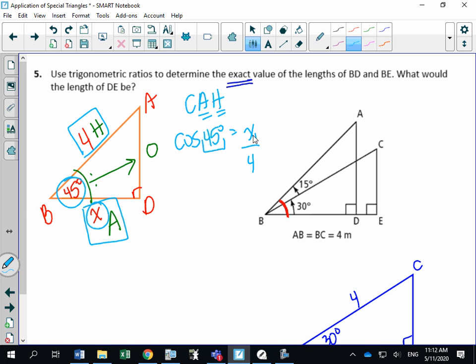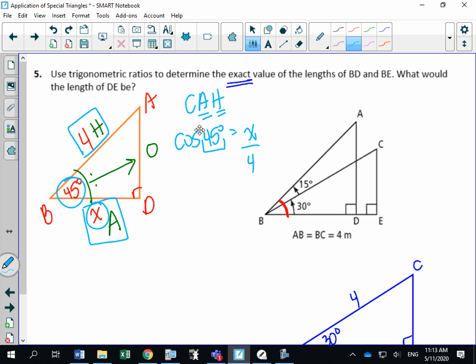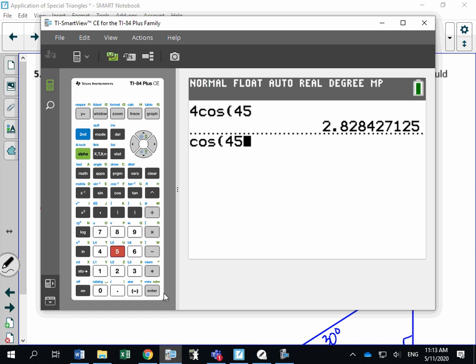If this was math 10C and I said, what is X? You would say we need to isolate X. It's being divided by 4. Let's multiply both sides by 4. So if this was 10C, you would say your answer is 4 times the cos of 45, that number there. And I would have said for 10C, 2.8 would be your final answer. In 20-1 and 30-1, you can no longer give decimal answers. You have to give exact values. So what you need to do is you need to take out this cos of 45 and you need to say, what exactly is the cos of 45 degrees? Like, what number is that? If I type in here, cos of 45 degrees, I get that number.